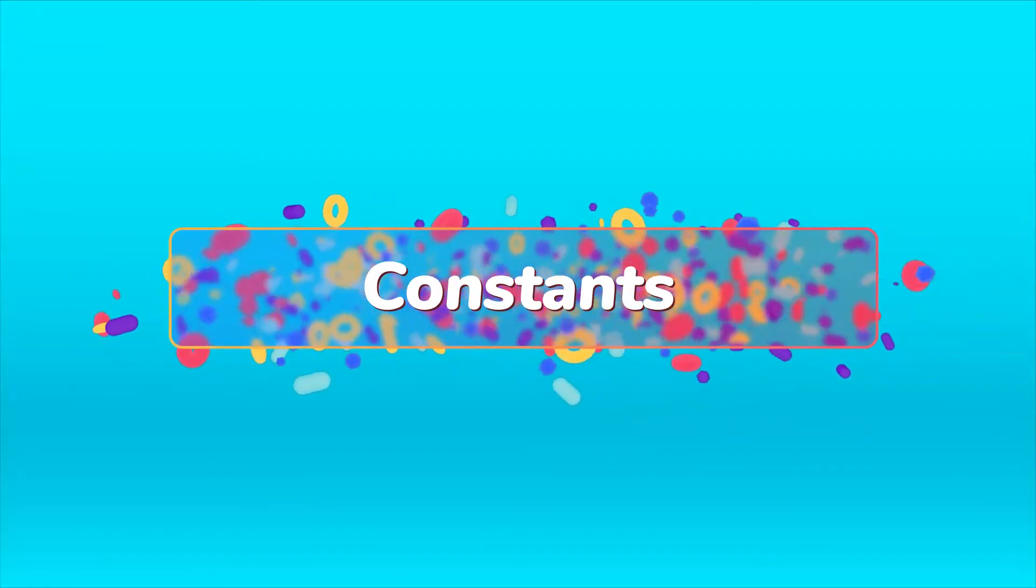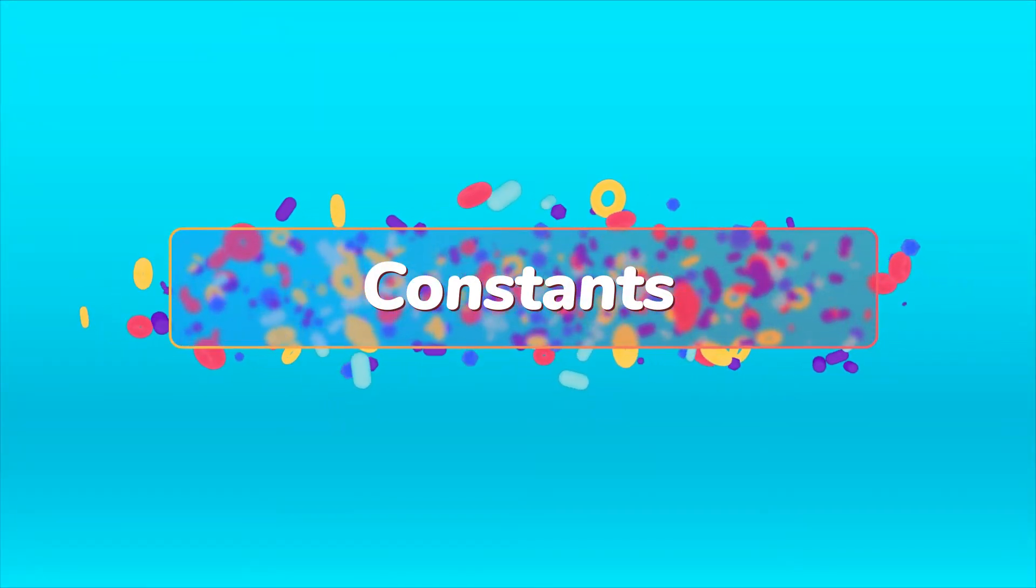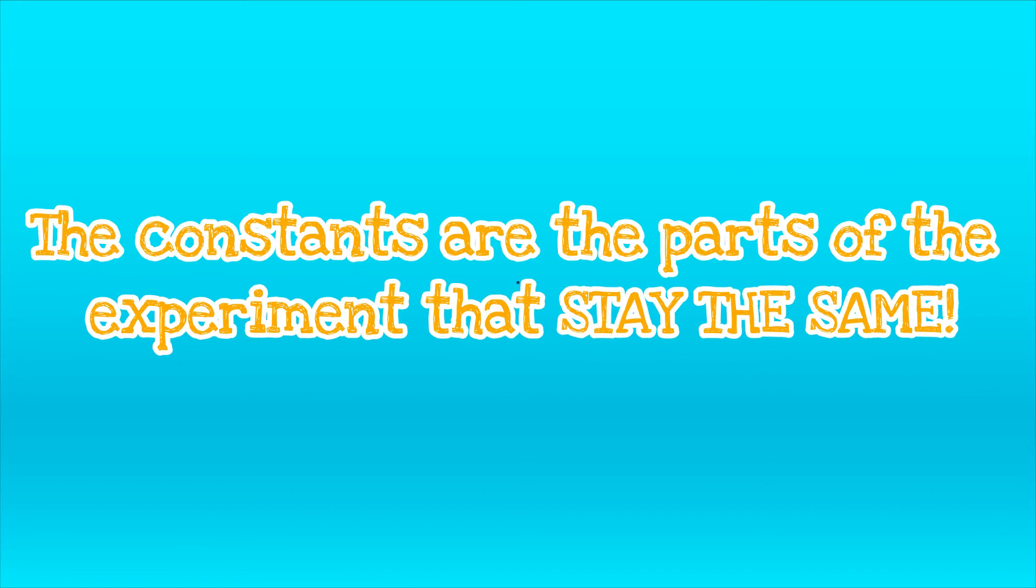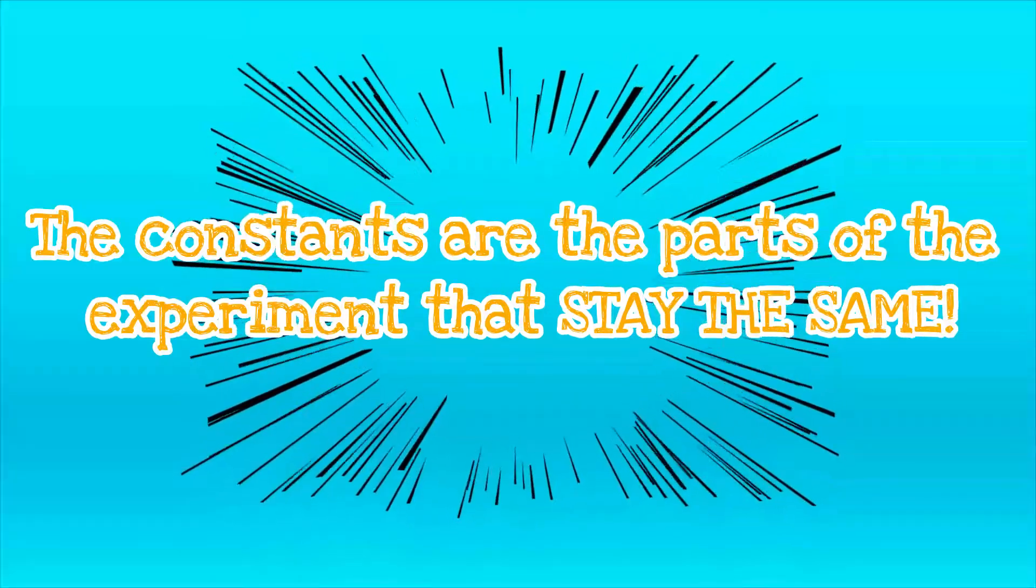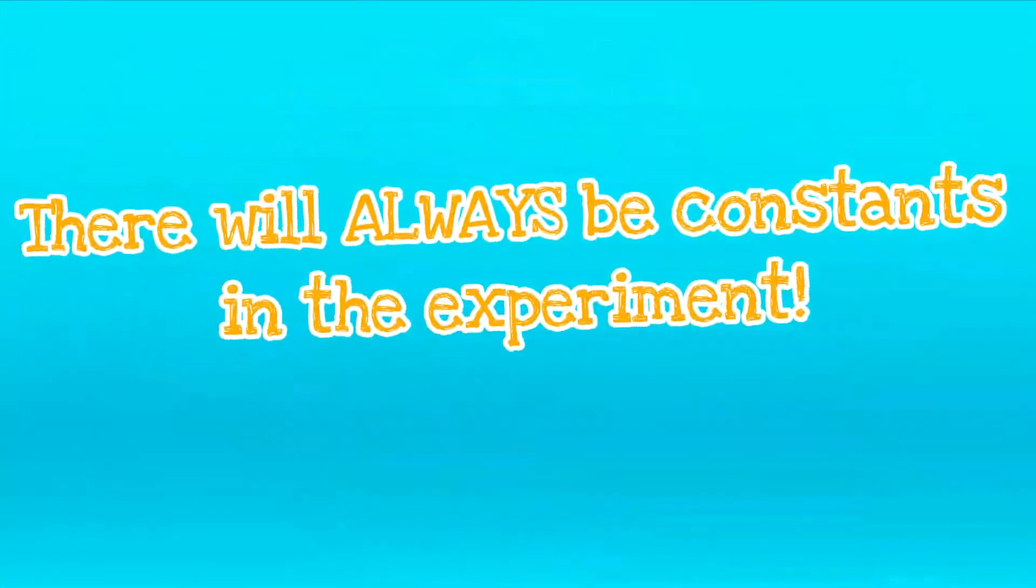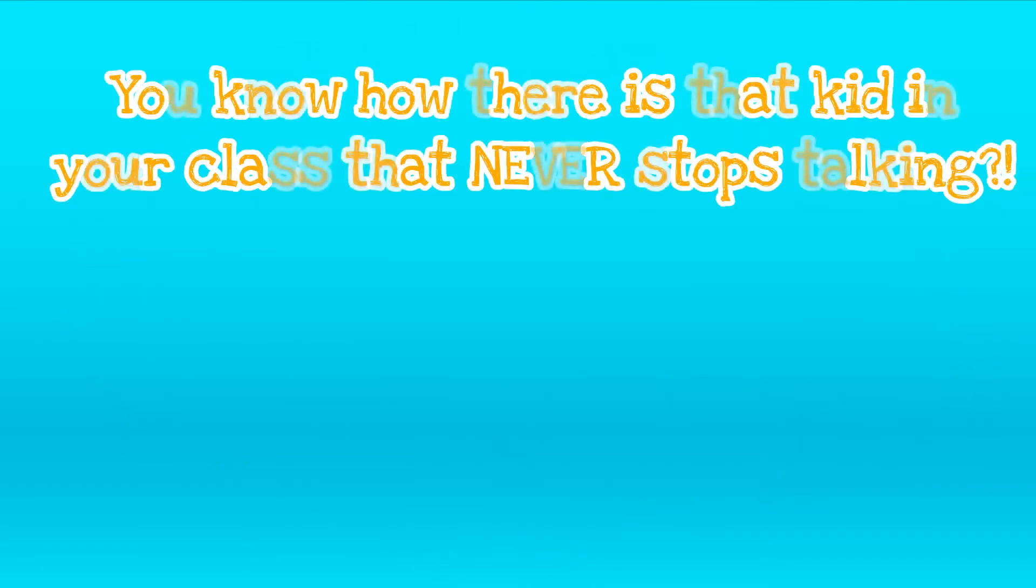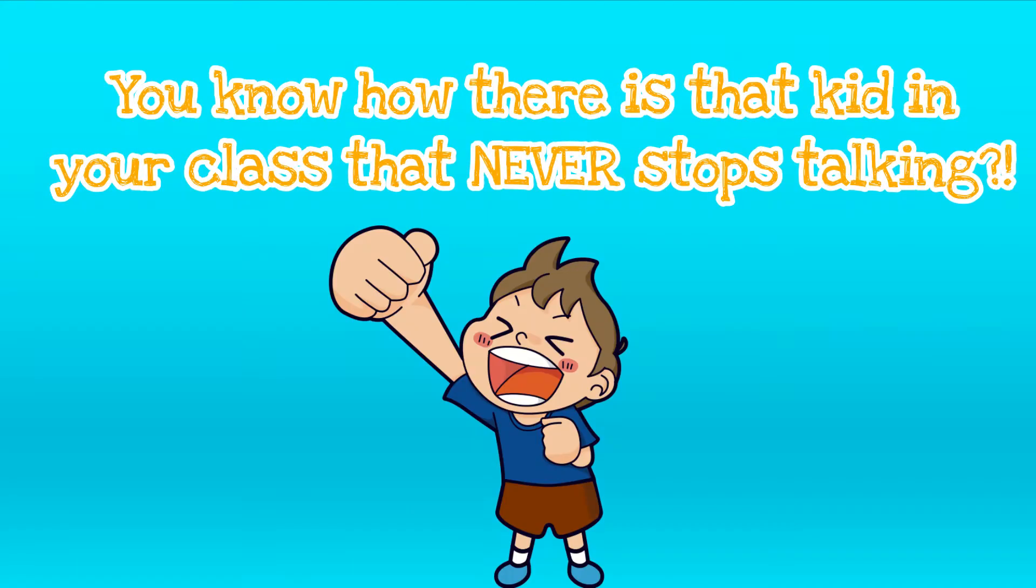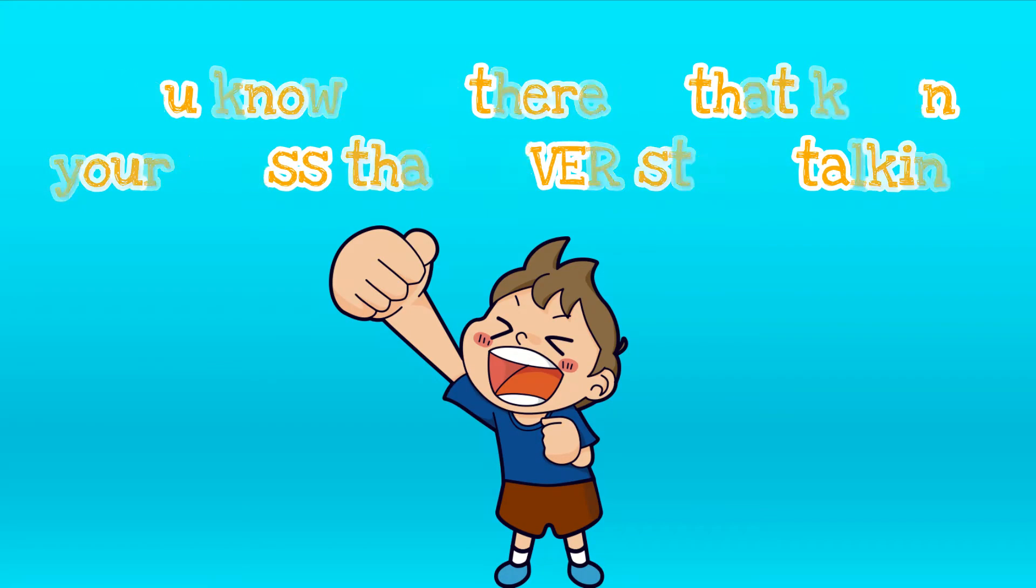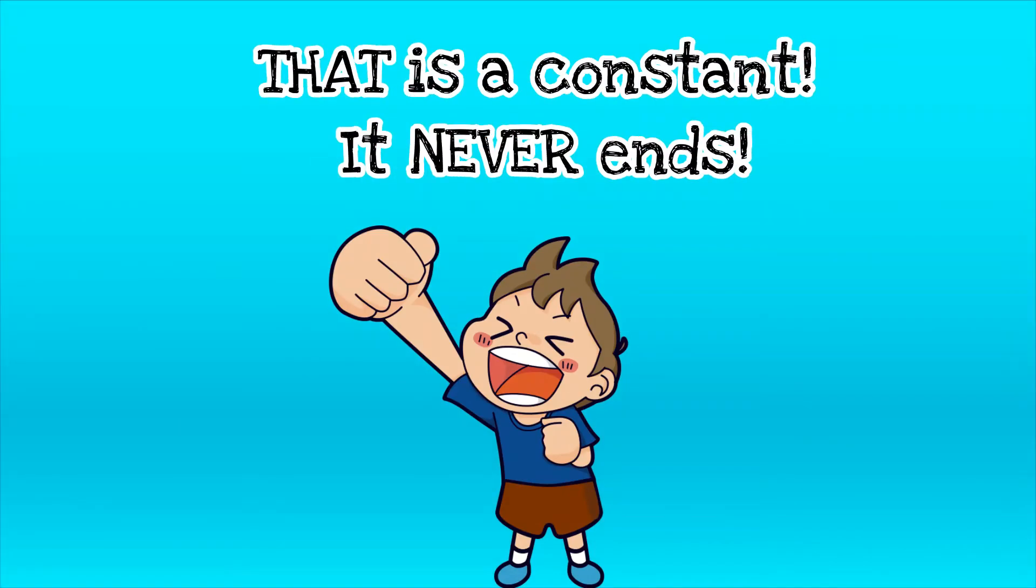Now let's discuss the constants in an experiment. The constants are the part of the experiment that stay the same. They do not change. There have to be constants in order for the experiment to work. You know how there's always that kid in every class that never stops talking? Well, that's a good real life example of a constant.